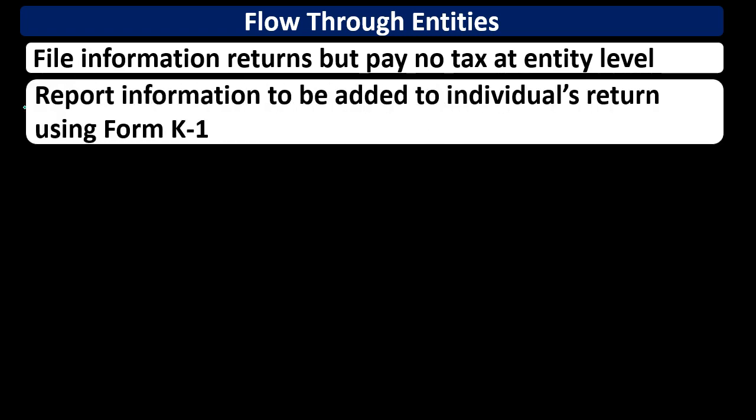Key components of the flow-through entity are that they file an information return but pay no tax at the entity level. Unlike a sole proprietor filing a Schedule C as part of the 1040, flow-through entities file a separate information return. Note that this could be a little different for state taxes — states may tax these entities depending on the type and state — but we're discussing federal taxes here.